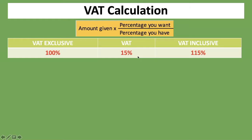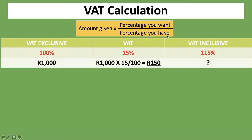Here is our first example. We are given a VAT Exclusive amount of 1,000 RAND, and we are asked to calculate the VAT and the VAT Inclusive. We know that this 1,000 RAND is the 100%. To calculate the VAT, we take 1,000 RAND multiplied by 15% — because that's what we want to calculate — and divide that by 100%, which is the percentage for VAT Exclusive. This gives us a VAT amount of 150 RAND.